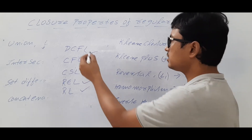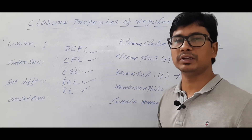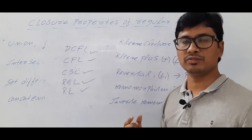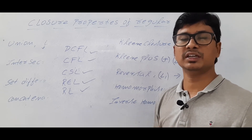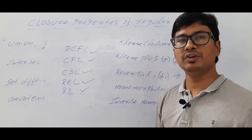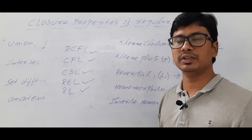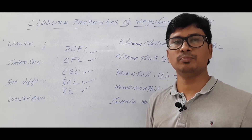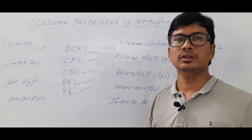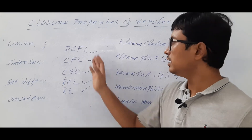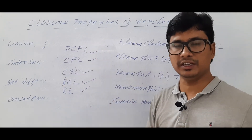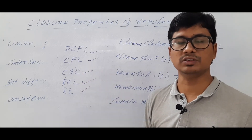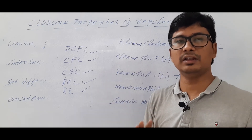We have similar closure properties for all these five language classes. Instead of discussing them, you have to remember them. For example, if L1 is a deterministic context-free language and L2 is a deterministic context-free language, and you perform L1 union L2 — is the result a deterministic context-free language? For these you should either know the proofs or remember them. I request you to follow the Ullman textbook where the proofs are clearly explained. I have attached a PDF in the description section covering the closure properties of deterministic context-free languages, context-free languages, and the remaining three language classes.